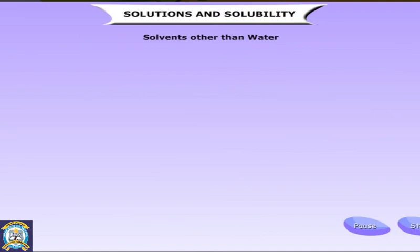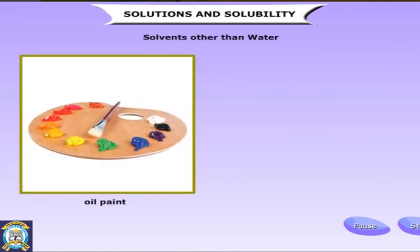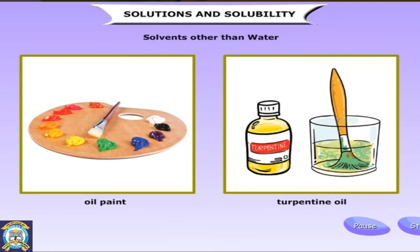Water is the universal solvent, but it is not the only known solvent. Matters such as grease, tar, and oil paint dissolve in kerosene, petrol, and turpentine oil. Thus, kerosene, petrol, and turpentine oil are also solvents. Artists use turpentine oil to clean their paintbrush after use.